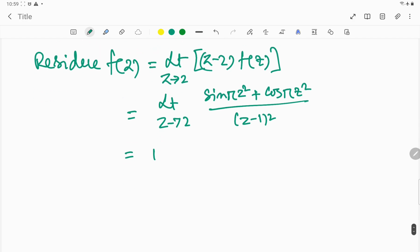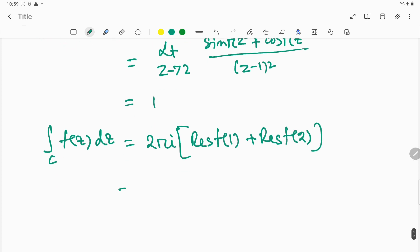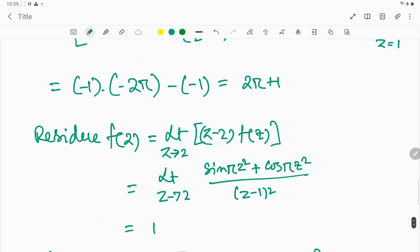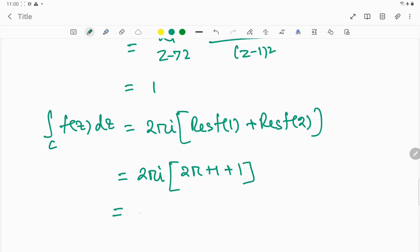We can now do this integration. You know 2πi times the sum of the residues, so we can write ∫f(z)dz equals 2πi times [residue at z=1 plus residue at z=2]. This equals 2πi times (2π + 1 + 1), so finally the result is 4π²i + 4πi.